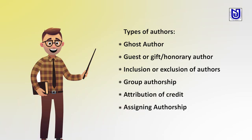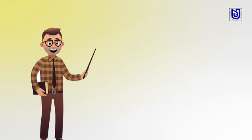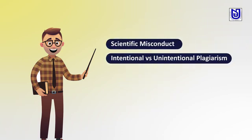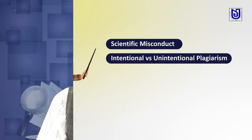Identification of publication misconduct and conceptions: scientific misconduct includes intentional versus unintentional plagiarism. That is a very important distinction in identifying publication misconduct. Intentional versus unintentional plagiarism is becoming a very important part of this topic.